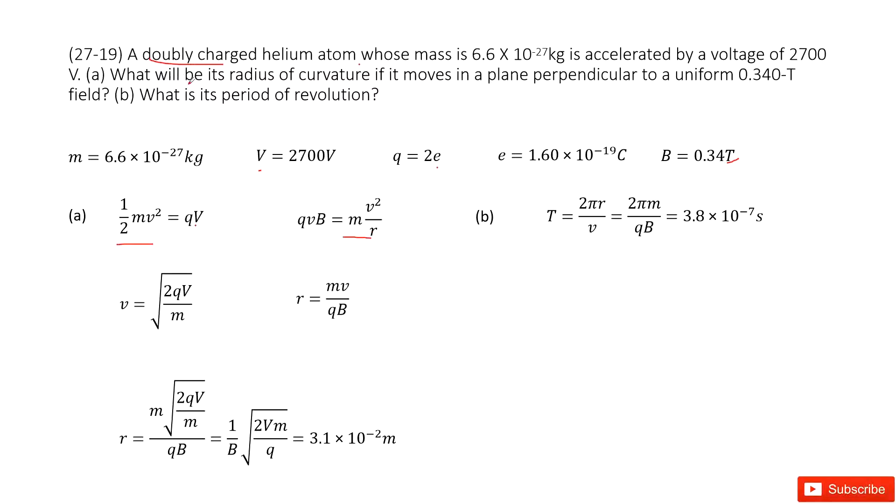Now we need to find its radius, so we need to find r. From this equation, we can get the formula for r as mv divided by qB. Looking at this formula, you can see m is given, q is given, B is given, v is not given. How can we get it?